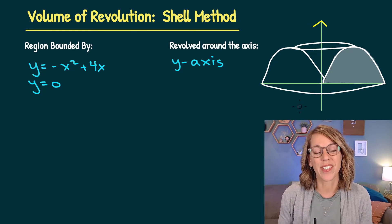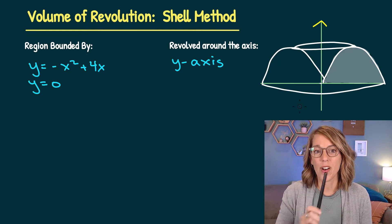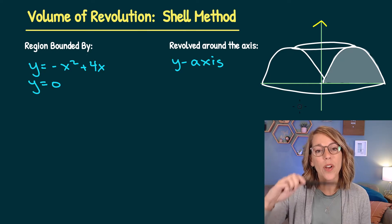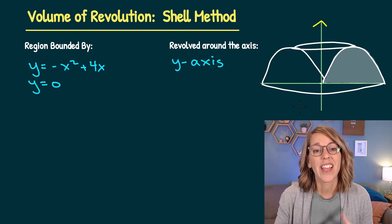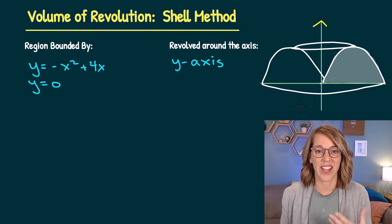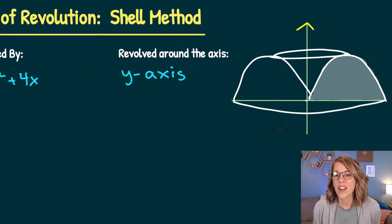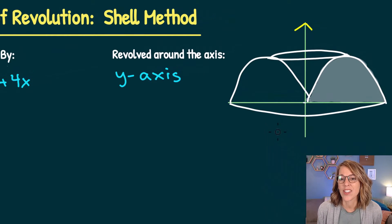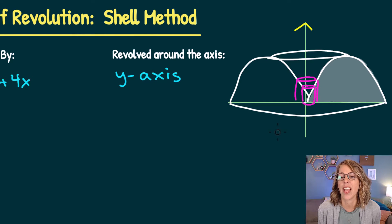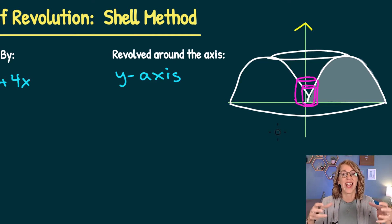I'm going to show you three different examples of the shell method. We're going to take one revolved around the y-axis, one revolved around the x-axis, and then one around a different axis. What we're doing is building these inner stacking shells. Here's a sample shell, and I can draw another sample shell. I'm using the height of that function as the height of my cylindrical shell, and then I'm inner stacking these.